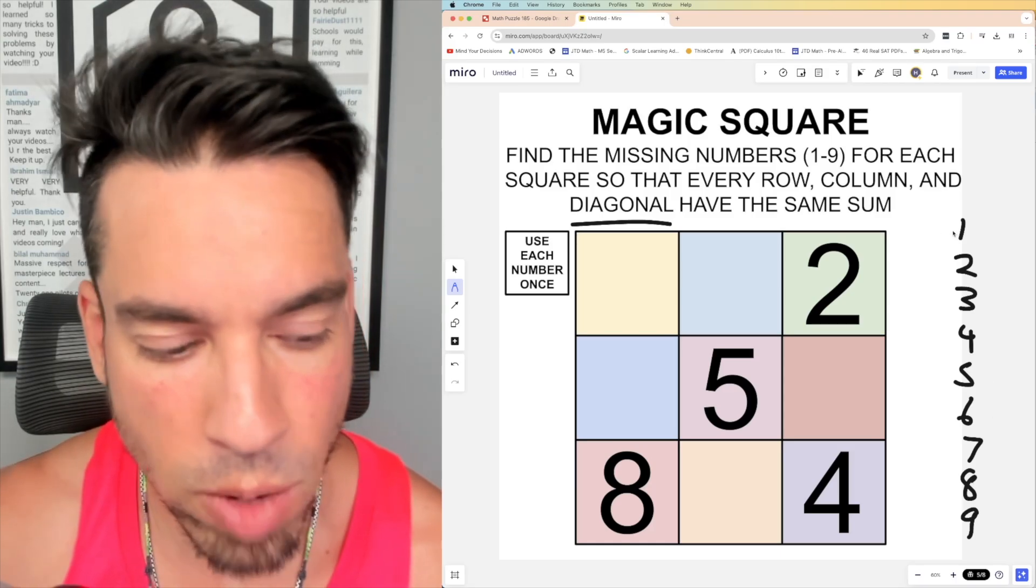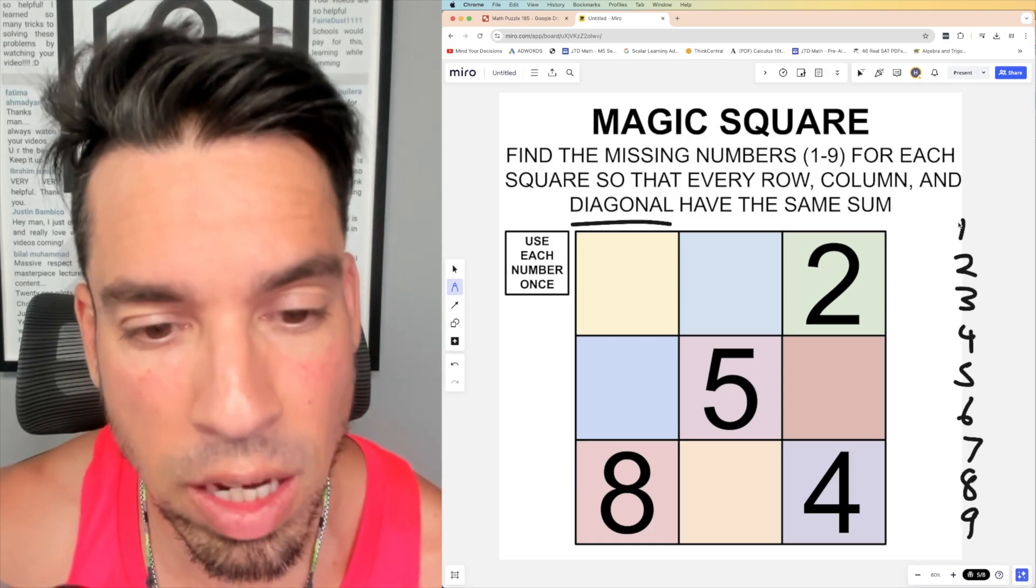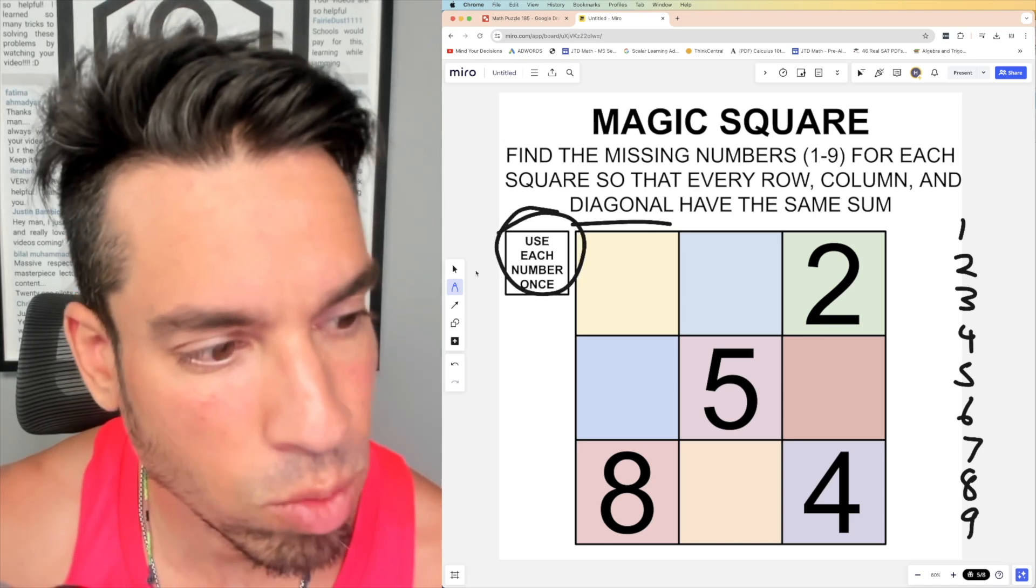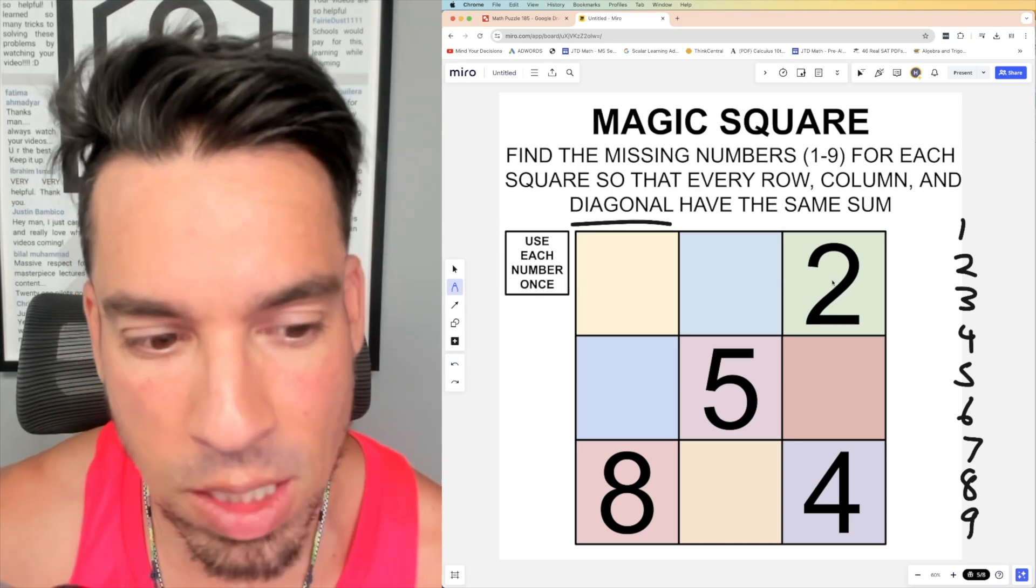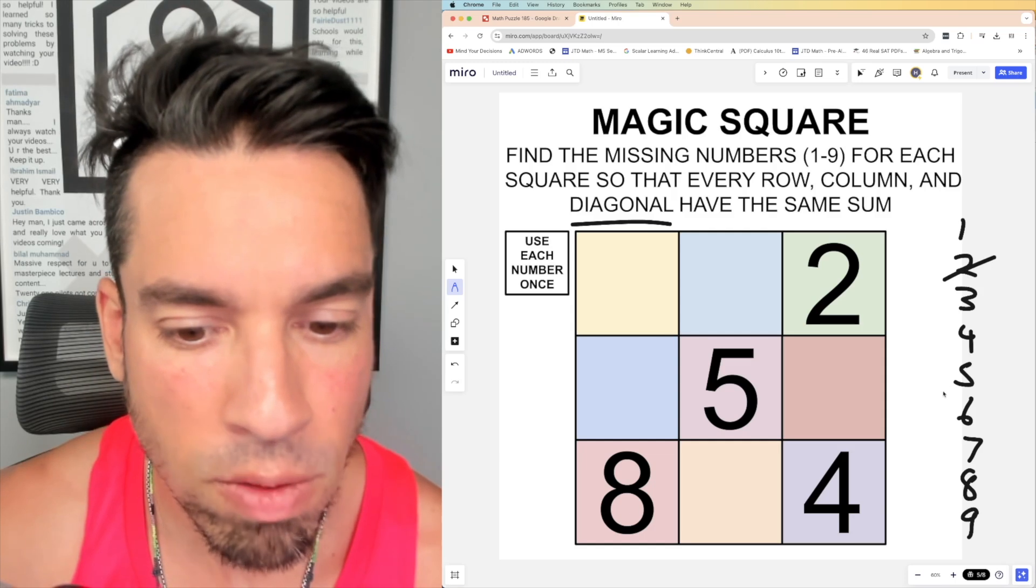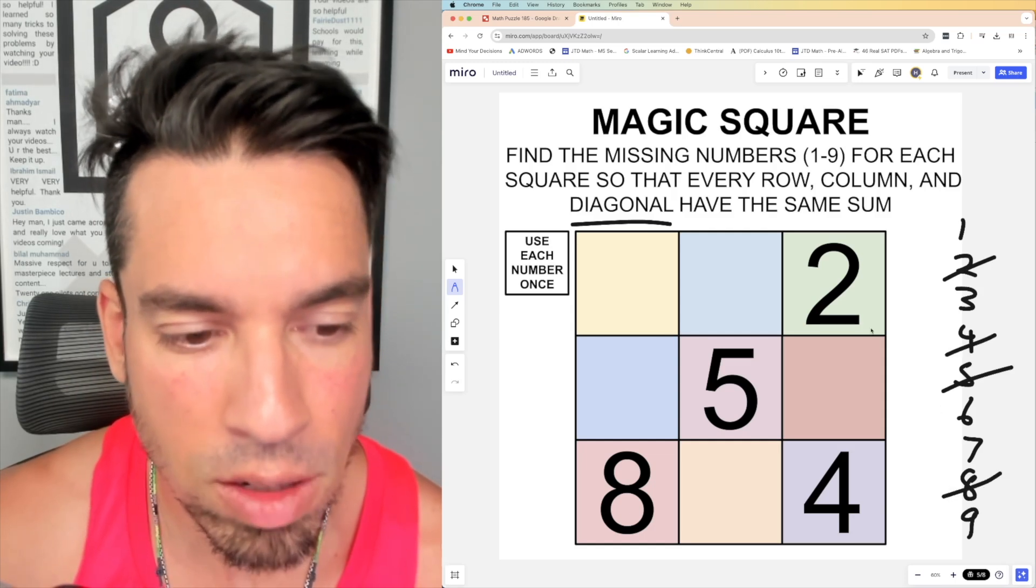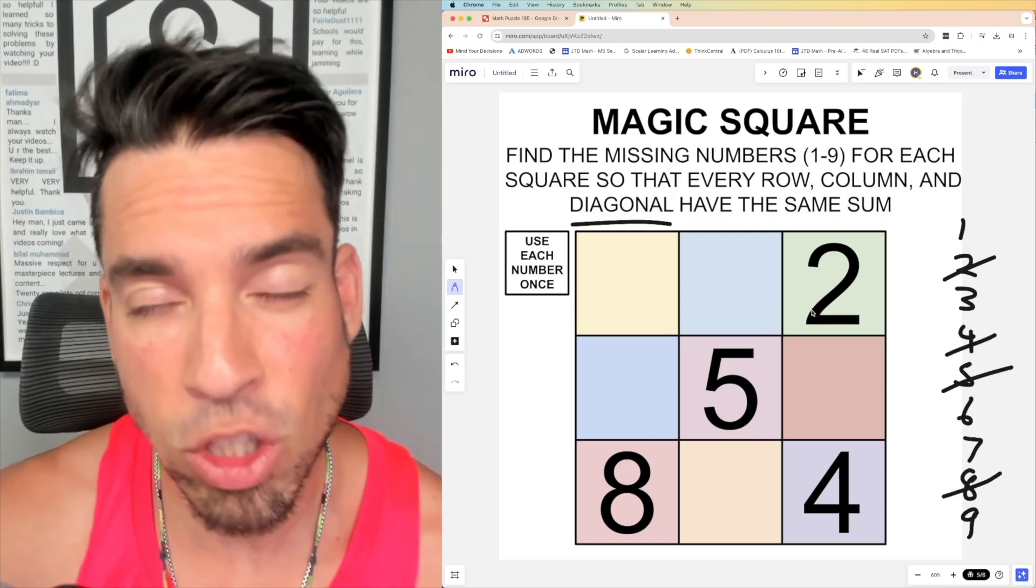So the first thing we're going to do is we're going to write out numbers one through nine. We're only including one through nine and we're only using each number once, which means since we already have a two, five, four, and eight, two, five, four, and eight are out.